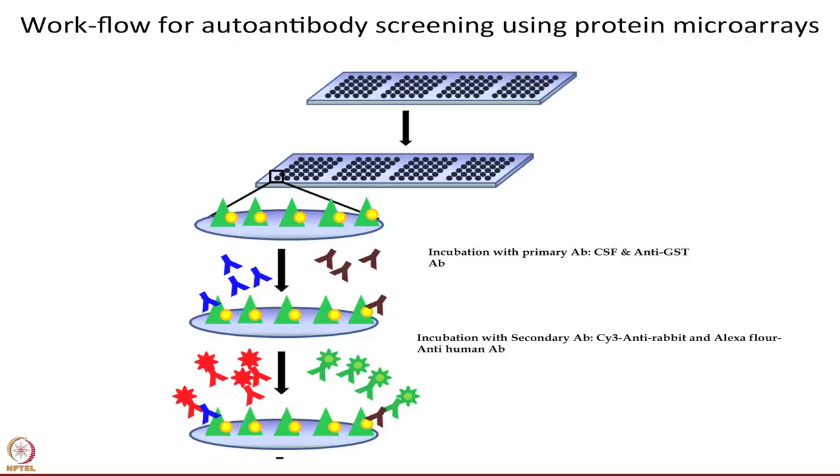While the assay looks very straightforward and simple, data analysis and further data interpretation becomes very challenging. Here I have shown the workflow for autoantibody screening using protein microarrays. You can think about a similar experiment done using western blots — exactly the same concept, except that instead of a membrane you are using protein arrays on a different substrate, especially glass or nitrocellulose membrane. All the proteins are printed on the chip. First you want to block your slide so that all the regions where proteins are not printed do not give you background.